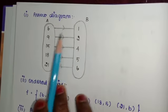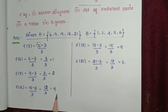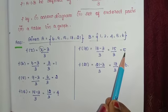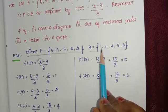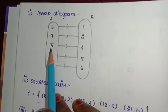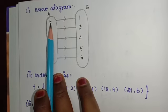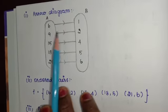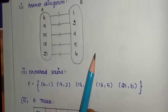Now, first let us draw the arrow diagram. In set A: 6, 9, 15, 18, 21 and in set B: 1, 2, 4, 5, 6. The answer is: 6 maps to 1, 9 maps to 2, 15 maps to 4, 18 maps to 5, 21 maps to 6. Draw arrows showing these mappings.